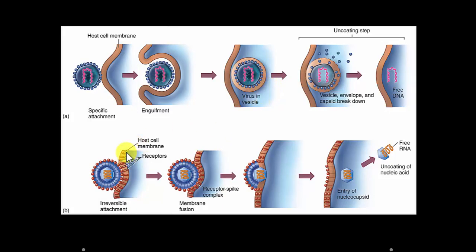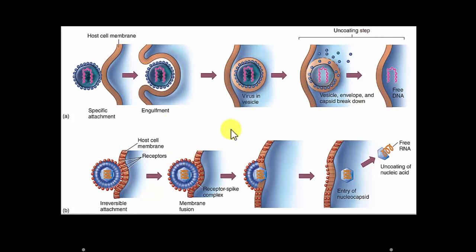Here's a textbook figure showing the same things. In endocytosis, the virus attaches and the cell engulfs the virus, coating it in a separate vesicle. After that, the virus breaks down the vesicle and capsid — this is the uncoating stage — releasing the DNA or RNA into the cell. Every virus is a little different, so we're painting this with a broad brush. Uncoating involves removing any surrounding that's covering the DNA or RNA, including both the vesicle and the capsid.